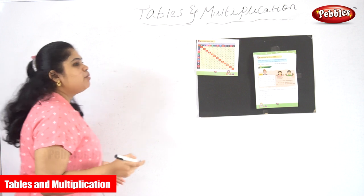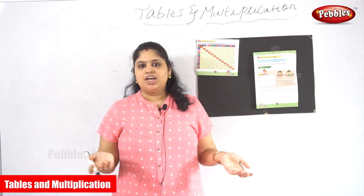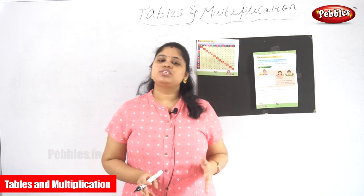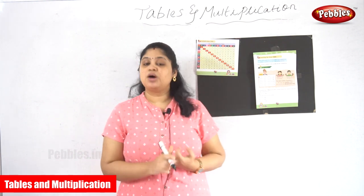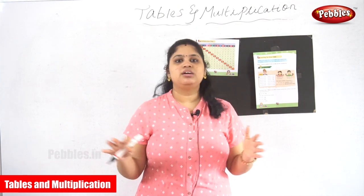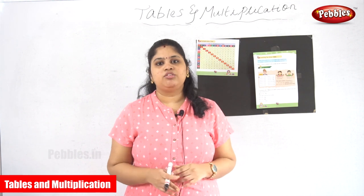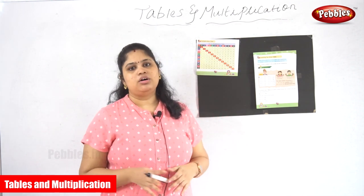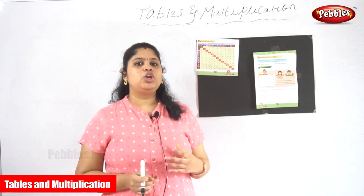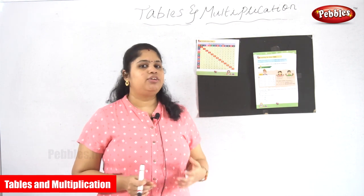The 10th table is very easy because any number that ends in 0 always makes calculation easy — whether it comes as addition, subtraction, multiplication, or division. These are the four basic arithmetic calculations. In all four, if there is a 0 at the end of the number, the answer is very easy to get.